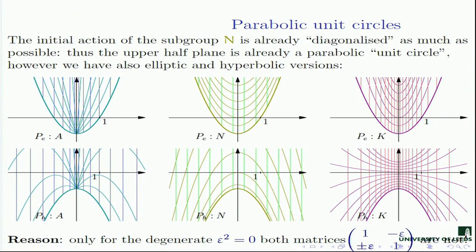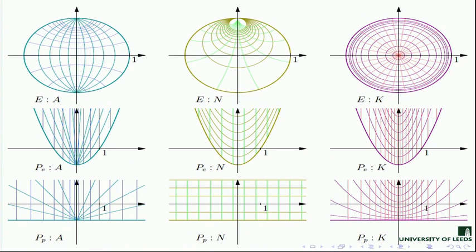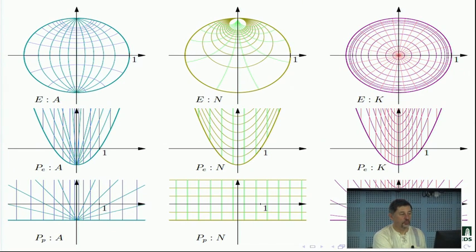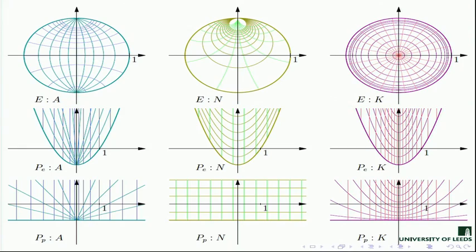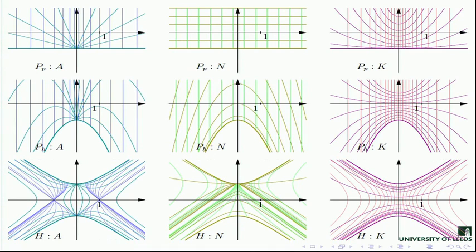At the end of last lecture we discussed the Cayley transform, which we produced using hypercomplex numbers in elliptic, parabolic, and hyperbolic cases. We found certain similarity and transition from elliptic to hyperbolic through parabolic, and illustrated the connection between them on the example of three subgroups A, N, and K, which were initially used to analyze the Möbius transformation.